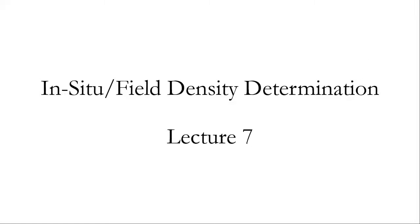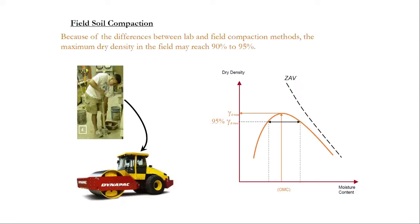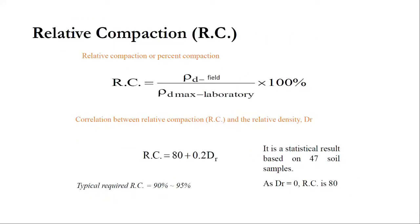Today we will discuss the in-situ or field density determination test. In the previous experiment we conducted the standard proctor test, where we determined the maximum density and the optimum moisture content. Because of the differences between lab and field compaction methods, the maximum dry density in the field may reach 90 to 95 percent. Relative compaction means how much the soil in the field is compacted with respect to the maximum dry density obtained from the standard proctor test, and there are several correlations between relative compaction and relative density.